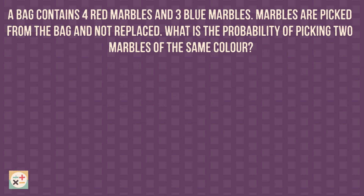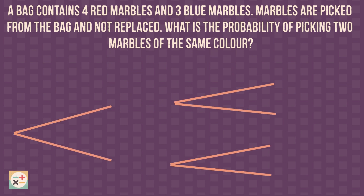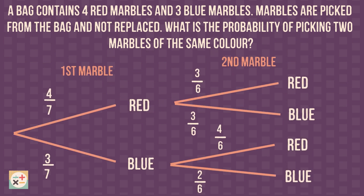But what if we are asked to calculate the probability for more than one combination of outcomes? Well, we simply add up the final probabilities for those combinations.